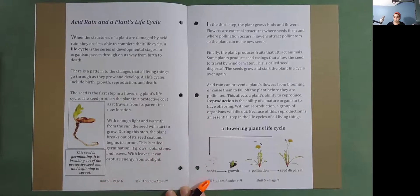A flowering plant's life cycle: Seeds, Growth, Pollination, Seed dispersal, and it starts again.